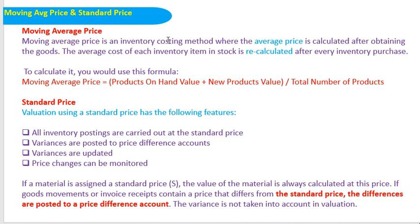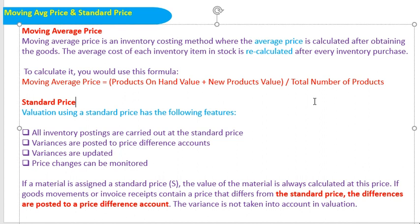Moving average price is an inventory costing method where the average price is calculated after obtaining goods. The average cost of each inventory item's stock is recalculated after every inventory purchase. Once you purchase inventory at a different price, and the earlier purchase was at a different price, we need to consider the overall average. So: (product on hand value × current moving average price + new products value) / total number of products gives the moving average price.